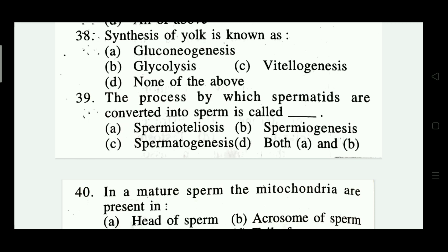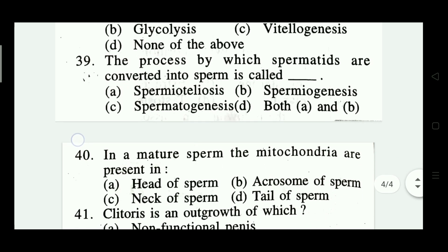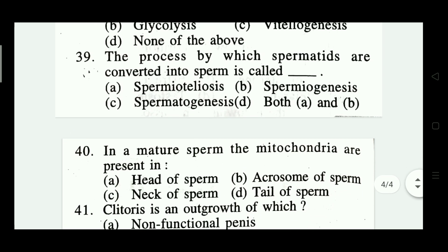Question number thirty-nine: the process by which spermatids are converted into sperm is called — spermioteliosis, spermiogenesis, spermatogenesis, both A and B. The right answer is both A and B — option D.